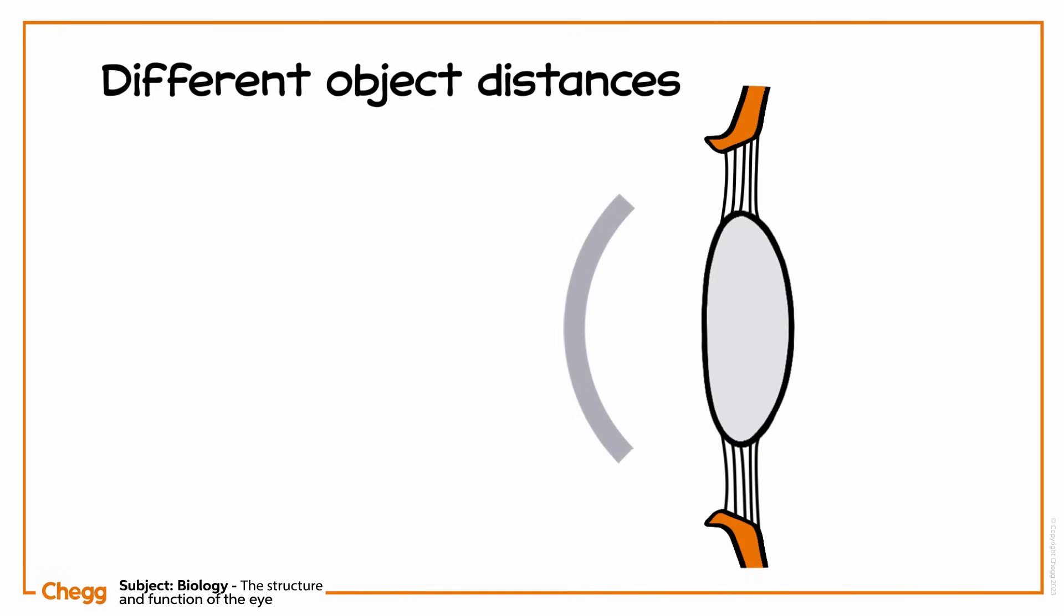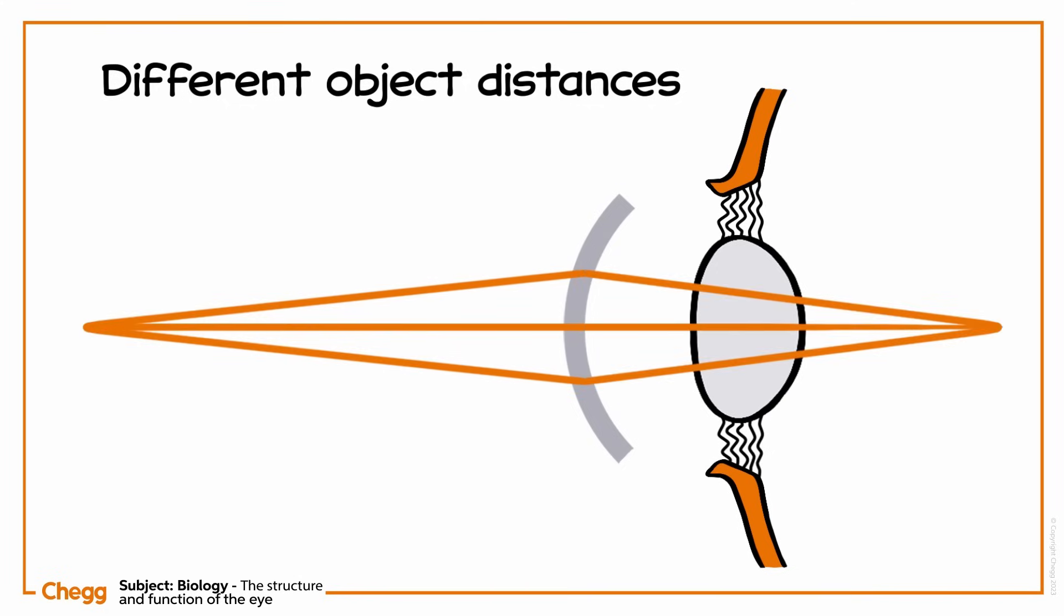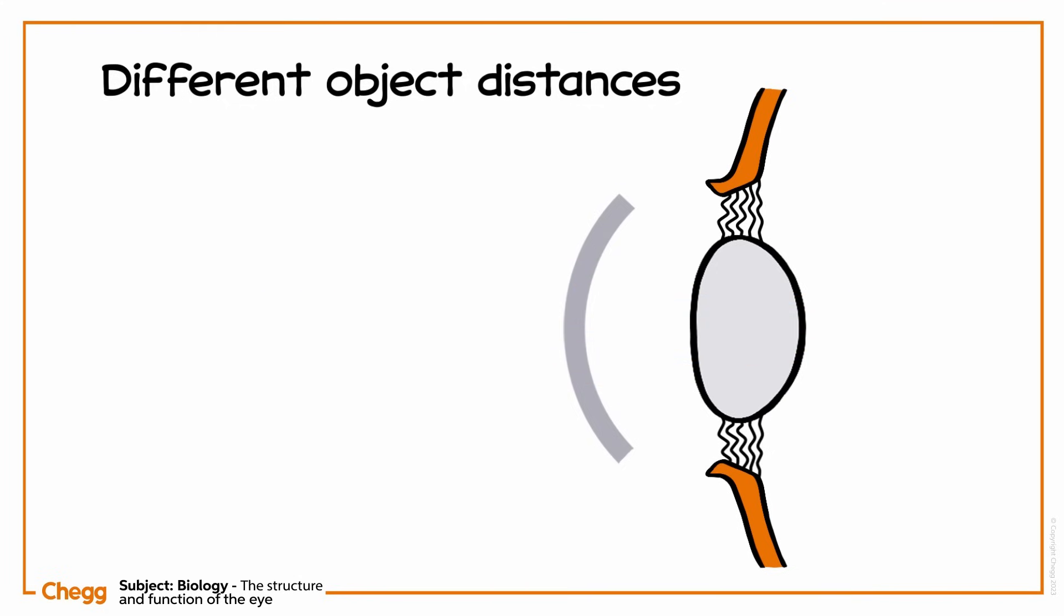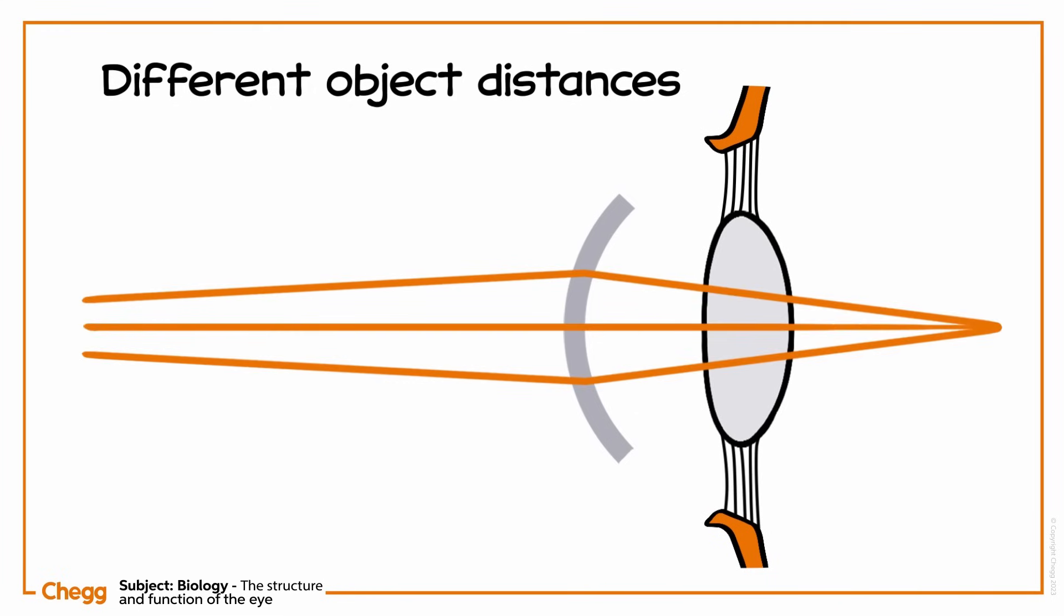The eye can also respond to different object distances. To focus on a nearby object, the ciliary muscles relax, and the lens becomes thicker, refracting light strongly. To focus on a distant object, the ciliary muscles contract, so the lens is thinner, only slightly refracting rays.